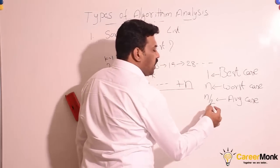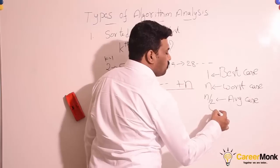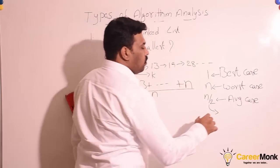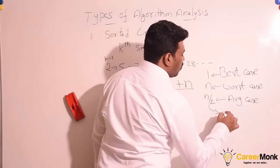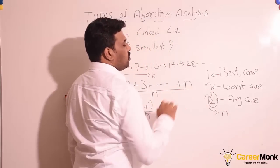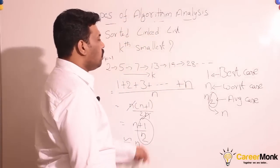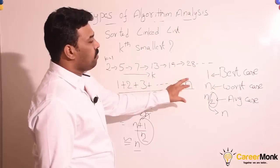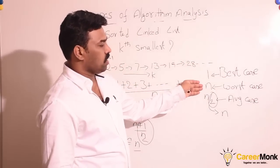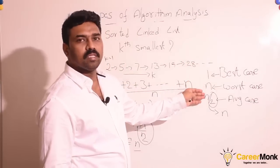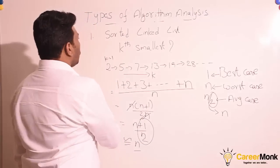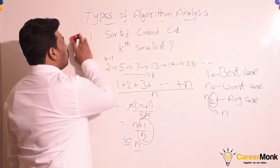If we look at the running time of the algorithm, we need to discuss it in terms of rate of growth, so we can say order of n. Usually, we ignore the constants. So for this problem and solution, we have got different best case, worst case, and average case. Now let us consider another example where we get the same best case, worst case, and average case complexity.